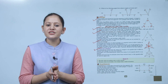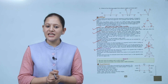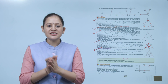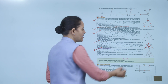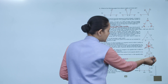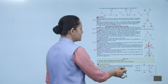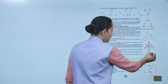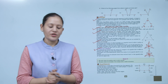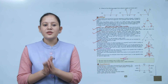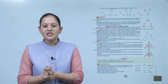Altitude of a triangle: the perpendicular drawn from a vertex to the opposite side is called an altitude. A triangle can have 3 altitudes. In the figure, AD is the altitude from vertex A to side BC. Similarly, BE and CF are the altitudes from vertices B and C. Note: the point where the medians meet is called the centroid, and the point where the altitudes meet is called the orthocenter.